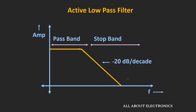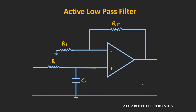If we see the frequency response of the active low-pass filter, it will be very similar to the passive low-pass filter. This filter has a cutoff frequency FC where the output will be 0.707 times the maximum value. Now, we had seen that by using the op-amp we can isolate the load and the filter circuit. But what if the input coming to this filter is also coming from another circuitry? In that case, it is quite possible that depending upon the impedance of that circuit, the cutoff frequency of this filter will get changed.